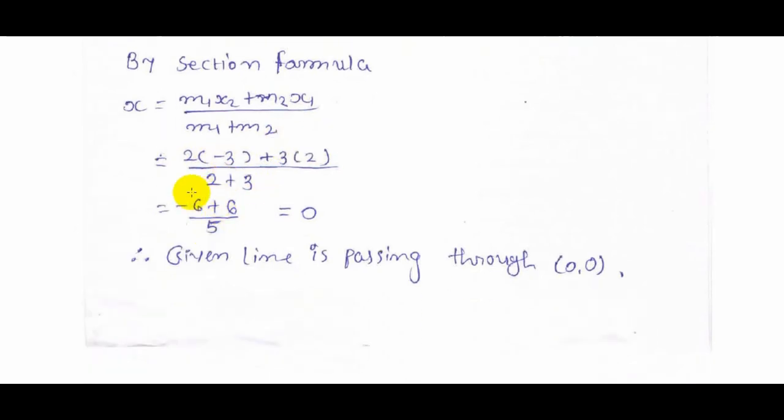As a result we got: x = (2(-3) + 3(2)) / (2 + 3) = (-6 + 6) / 5 = 0. The given line is passing through the point (0, 0). Thank you for watching.